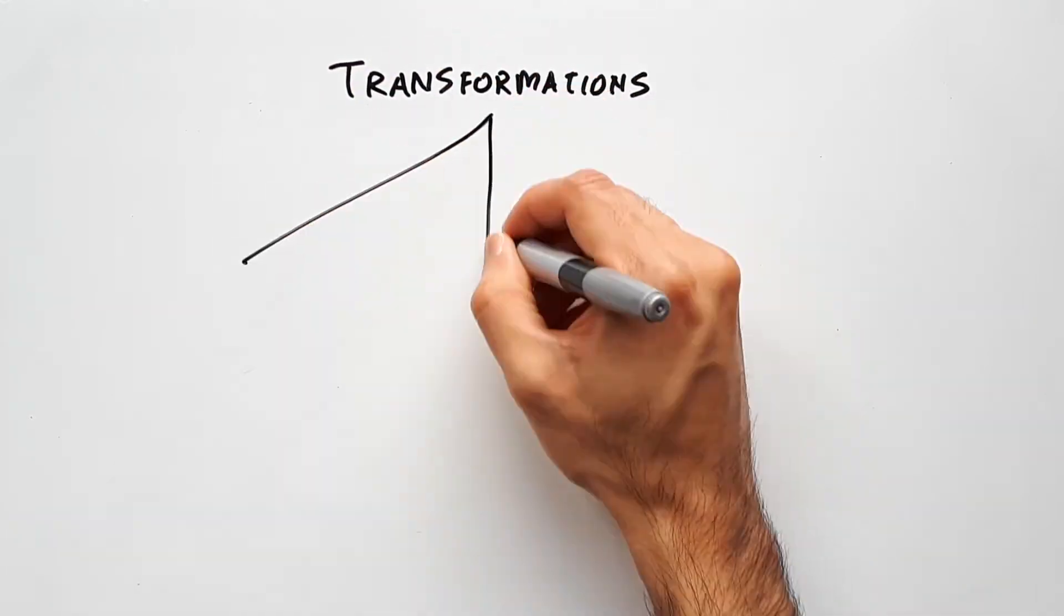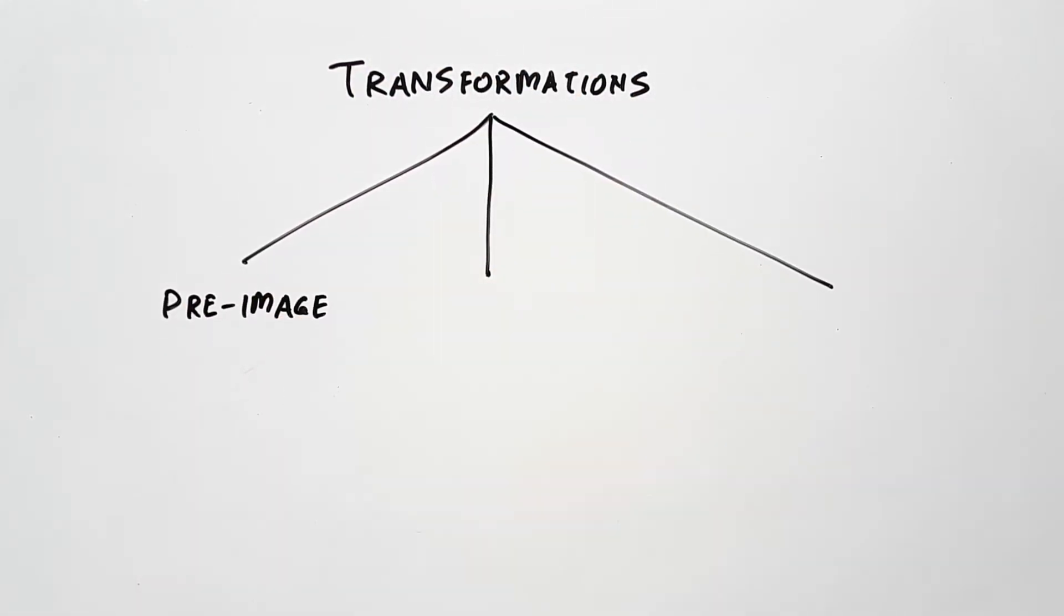You can view transformations from three different angles. The pre-image, which is an equation that you want to transform, such as y equals x squared, or y equals square root x.